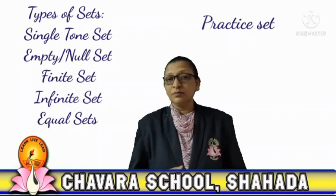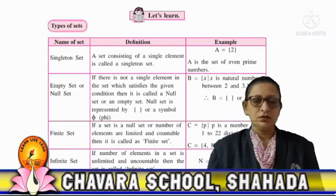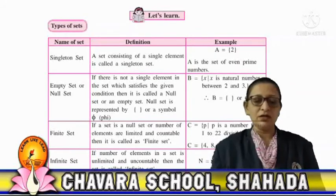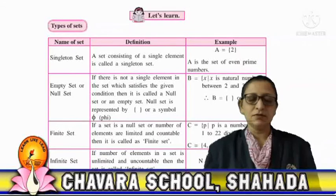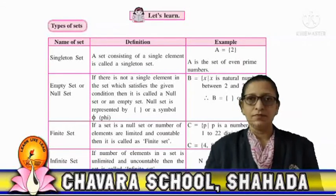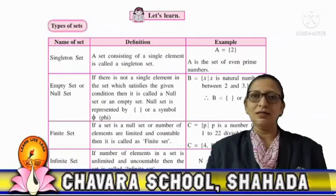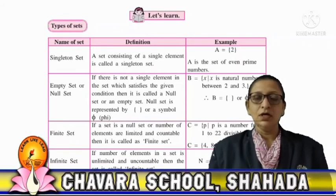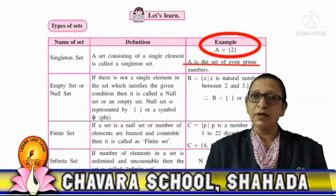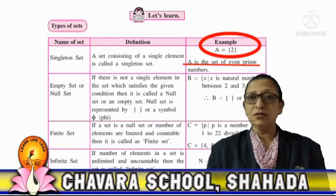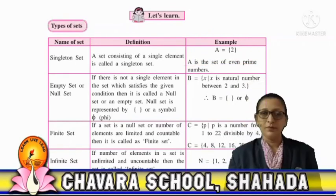Let us learn types of sets. In this chart there are different types of sets with their definitions and examples. First, a singleton set: a set consisting of a single element is called a singleton set. For example, the set of even prime numbers — since there is only one even prime number, which is 2.